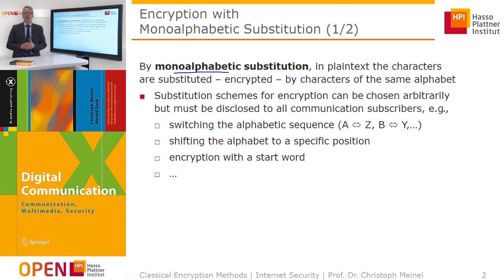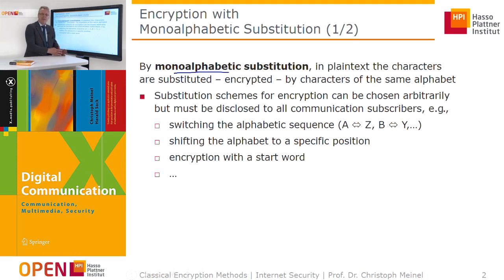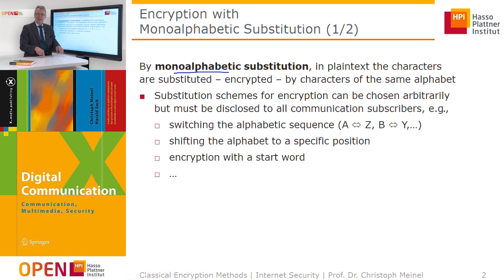Another idea for mono-alphabetic substitution is shifting the alphabet by a certain number of positions — for example, by five positions. So A is replaced by F, B is replaced by G, and so on. That is a shift.